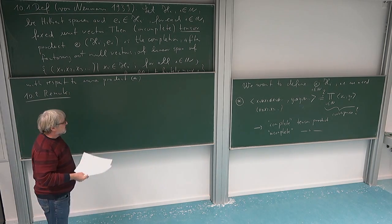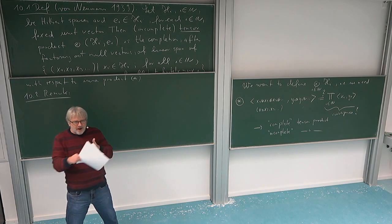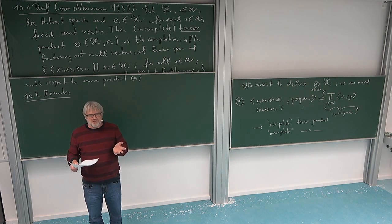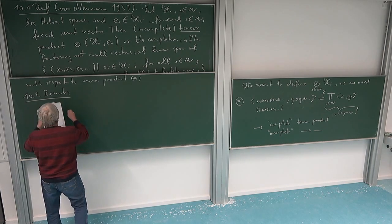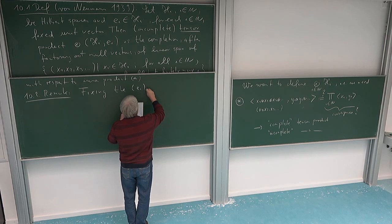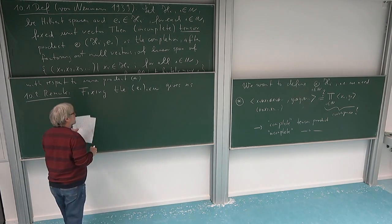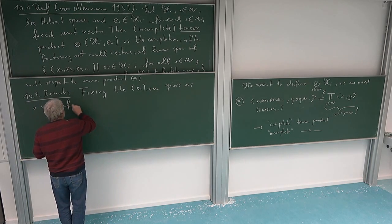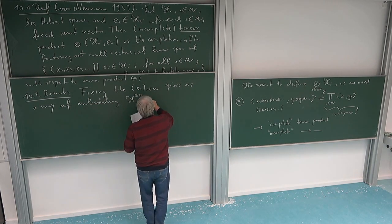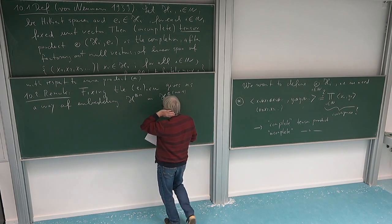Before proceeding to the remark, let me come back to the idea that what we are really doing here is an inductive limit of finite tensors, where we have embeddings of a tensor of n factors into a tensor of n+1 factors. This embedding is given by the choice of the e_i. So fixing the vectors e_i — one for each Hilbert space — gives us a way of embedding H_1 ⊗ ··· ⊗ H_n into H_1 ⊗ ··· ⊗ H_{n+1}.